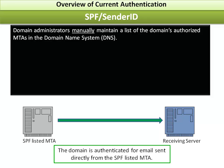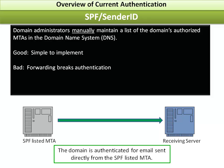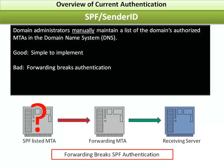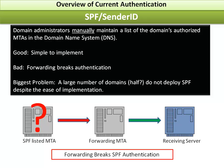The most commonly used domain authentication scheme is SPF, or Sender ID, a similar system, where domain administrators manually maintain a list of the domain's authorized MTAs in the domain name system. This is good because it's simple to implement, but forwarding will break authentication since only the final MTA is authenticated. The biggest problem is that a large number of domains — maybe half — do not deploy SPF despite the ease of implementation.